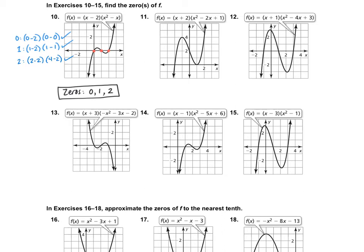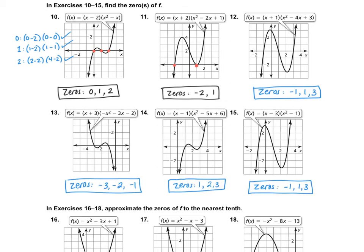Number 11 has the answer of negative 2 and positive 1, so my zeros are negative 2 and positive 1. Go ahead and pause the video and try numbers 12 through 15 on your own, then check your answers and see how you did. If you got any wrong, see if you can find your mistakes.